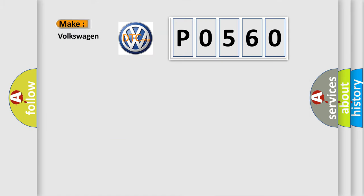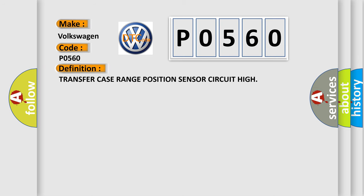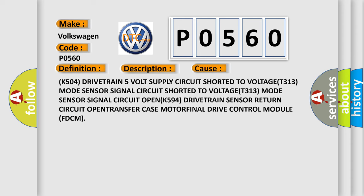What does the diagnostic trouble code P0560 interpret specifically? The basic definition is: Transfer case range position sensor circuit high. With the ignition on and no system under-voltage or over-voltage condition present, the sensor voltage is above a specified value for a calibrated amount of time. This diagnostic error occurs most often in these cases: K504 drive train 5V supply circuit shorted to voltage; T313 mode sensor signal circuit open; K594 drive train sensor return circuit open; transfer case motor; final drive control module (FDCM).